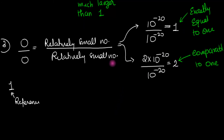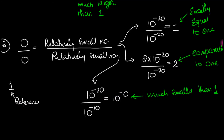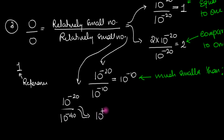I can take another example: 10 to the minus 20 divided by 10 to the minus 10 — both much smaller than 1 — which gives 10 to the minus 10, a number much smaller than 1. And finally, take 10 to the minus 20 divided by 10 to the minus 40, which gives 10 to the plus 20 — a number much bigger than 1.